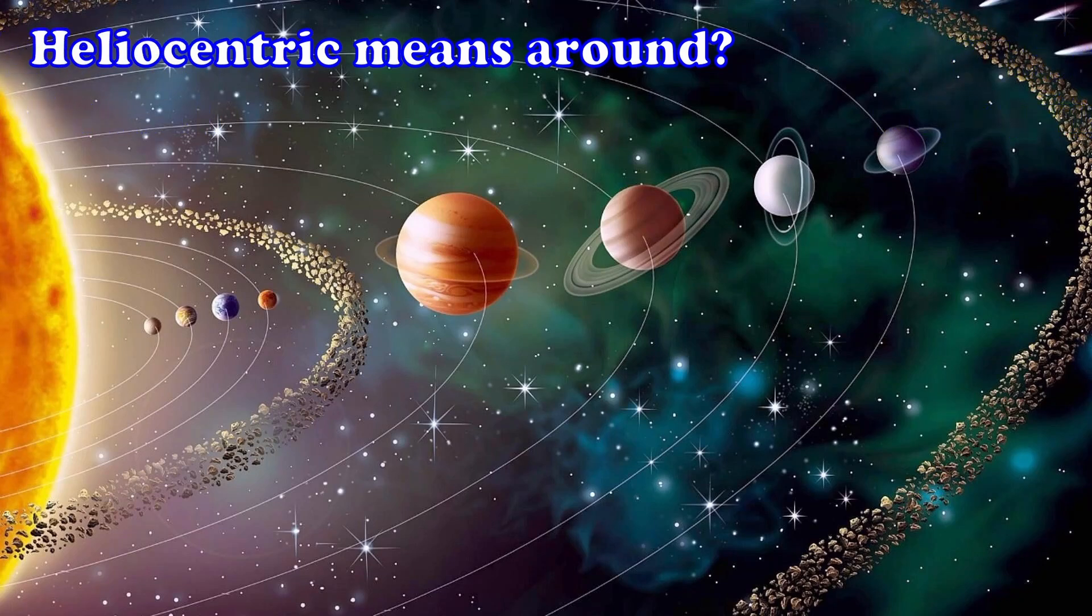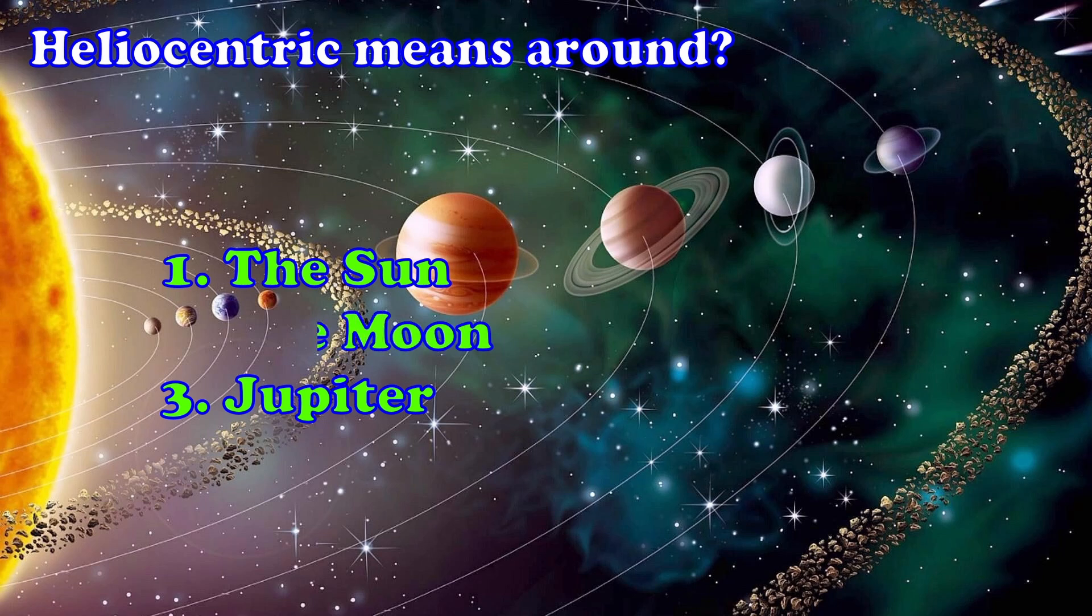Heliocentric means around? 1. The Sun 2. The Moon 3. Jupiter.